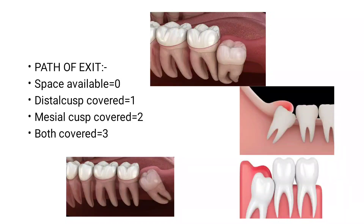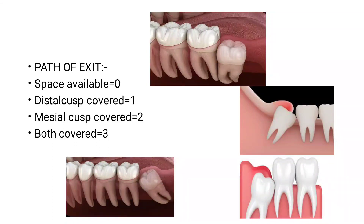Path of exit means what is the path available for the impacted third molar to erupt, and it also determines our difficulty index. If space is available to erupt the impacted third molar into the occlusal space, it is scored zero. If the distal cusp is covered, it is scored one. If the mesial cusp is covered, it is scored two. If both distal and mesial cusps are covered, it is scored three.